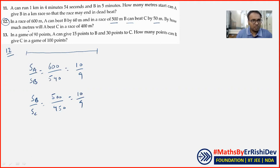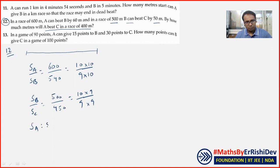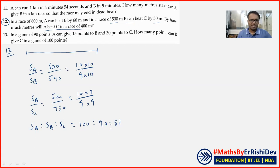How much will A beat C in a 400 metre race? ہمیں SA : SC چاہیے — B common ہے۔ B کو same کریں — LCM لیں 90۔ SA : SB : SC — SA/SB = 10/9، SB/SC = 10/9 بھی ہے — تو SA = 100، SB = 90، SC = 81۔